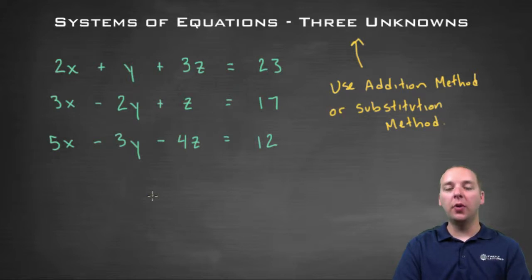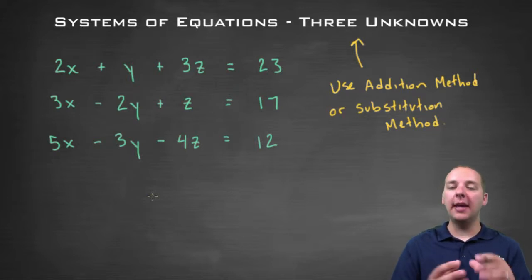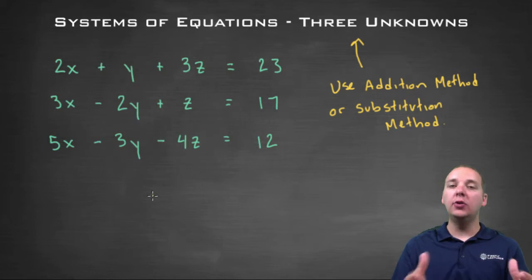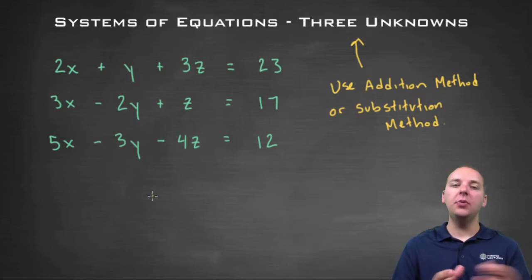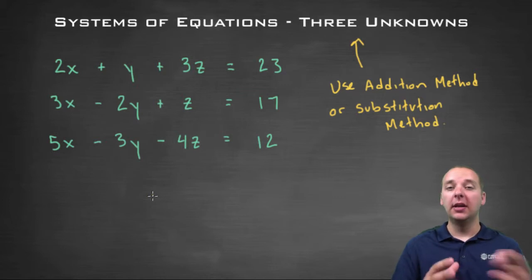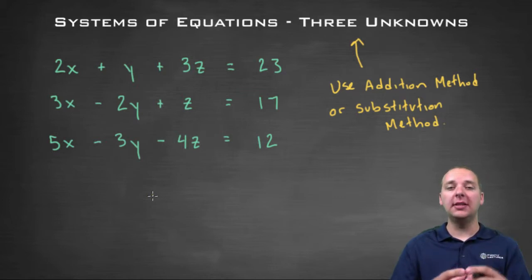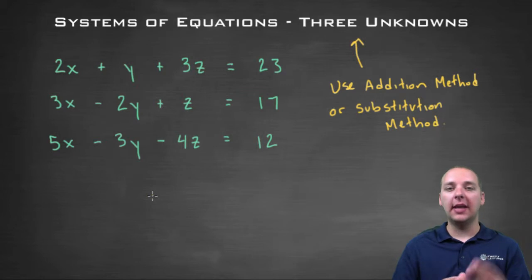Most of the systems we've been working with up to this point have only had two equations and two unknowns, usually x and y. But let's say we were given a much bigger system — one with three equations and three unknowns. How would you solve a system like that? Well, that's what we're going to take a look at in this video.